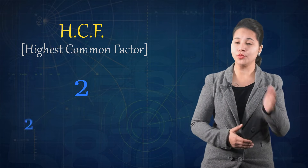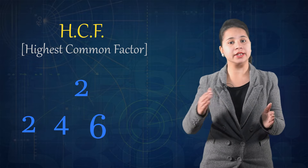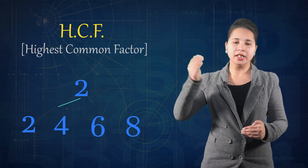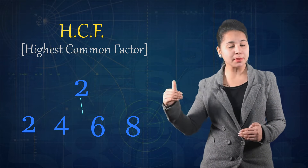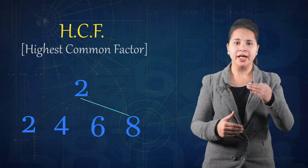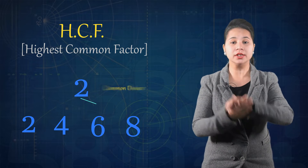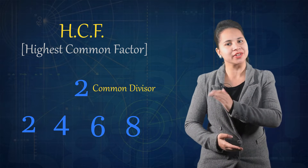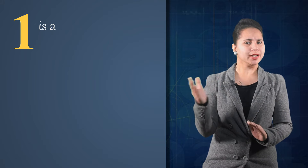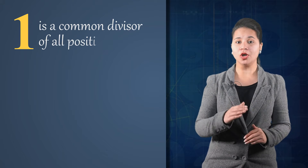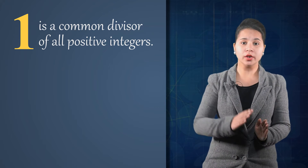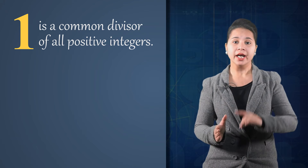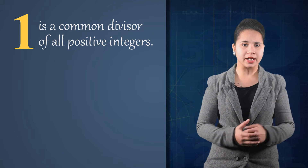For example, 2 is a common divisor of 2, 4, 6, and 8 — meaning 2 divides into 2, 4, 6, and 8 equally. It means 2 is a common divisor of 2, 4, 6, and 8. Now, 1 is a common divisor of all positive integers. This means two or more numbers can have many common divisors.